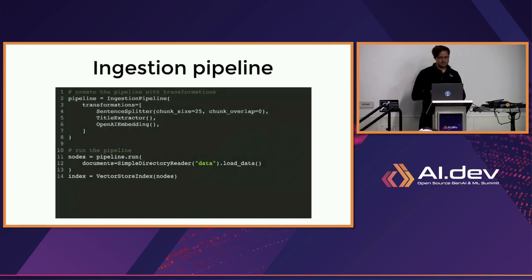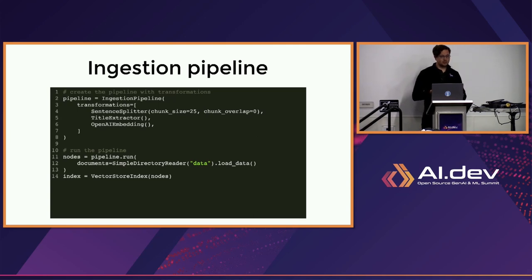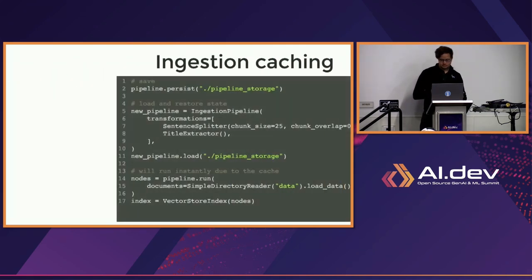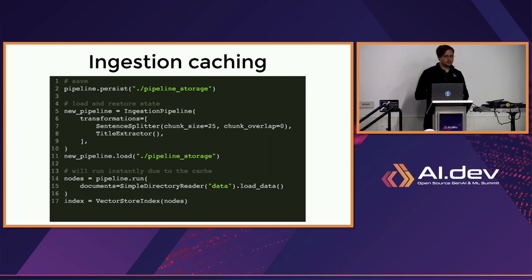But you're probably unlikely to be happy with it at this stage, because this is the most naive RAG stack that you could possibly put together. What you want to do is customize it according to the state and shape of your data, in which case you want to build an ingestion pipeline. This lets you configure a series of transformations that happen to your data, including how it is split, whether you're extracting metadata, and what embedding model you use. The result is a set of nodes that you can then pass to the same VectorStore index. And in production, you can cache your ingestion pipeline — either to disk or to a variety of databases — so when you rerun your pipeline, it reruns only the parts that have changed.